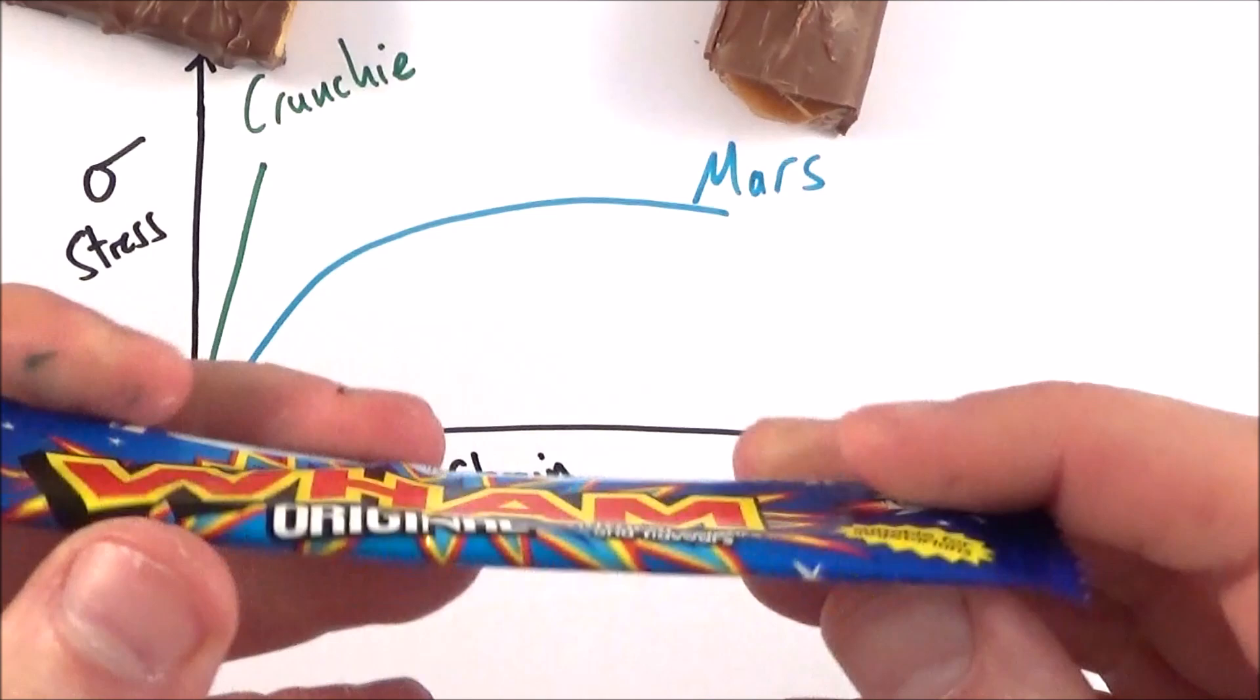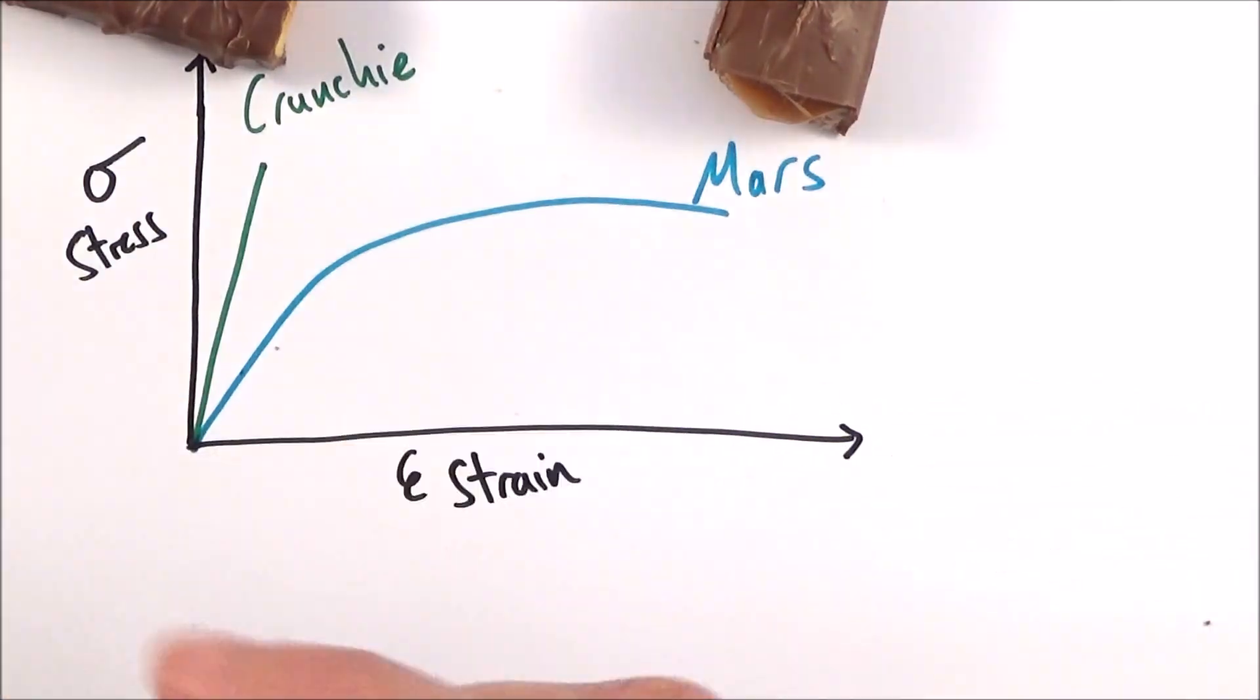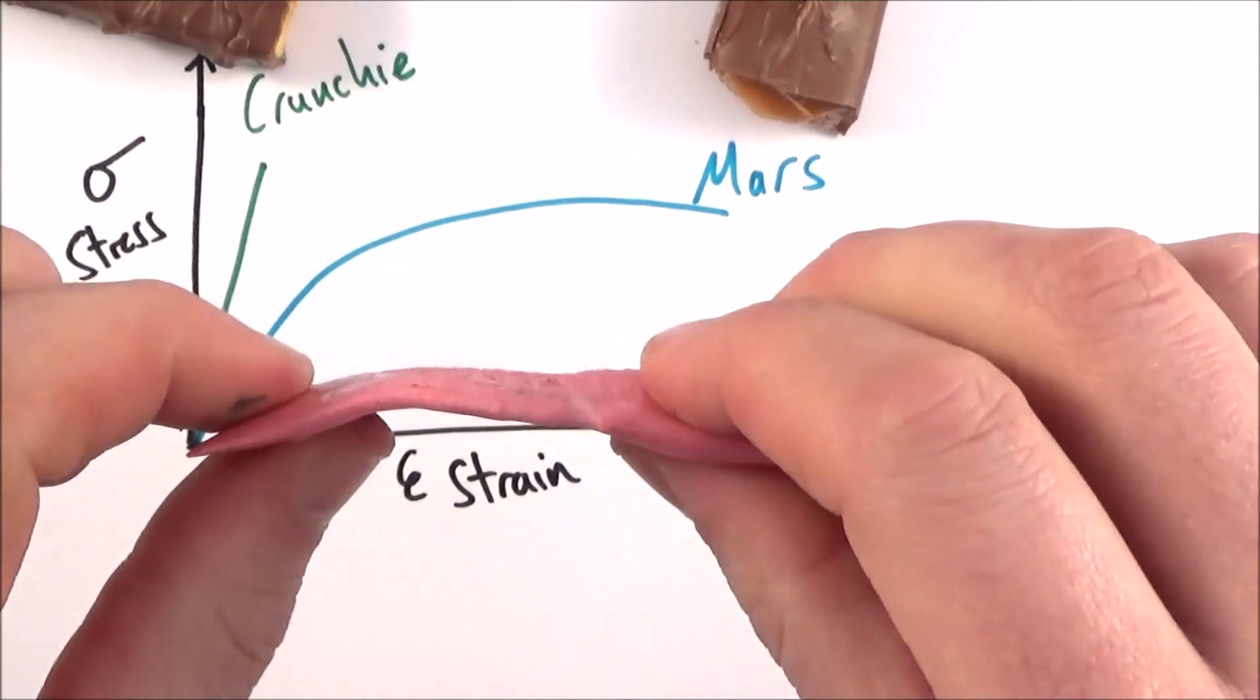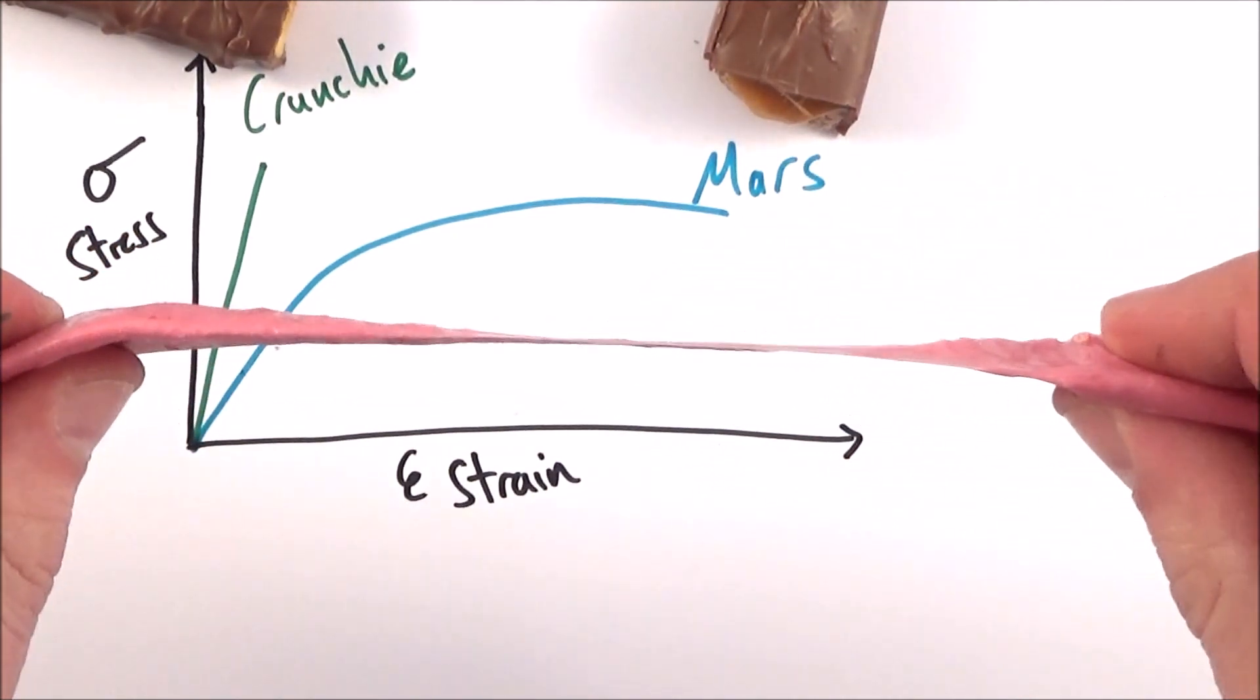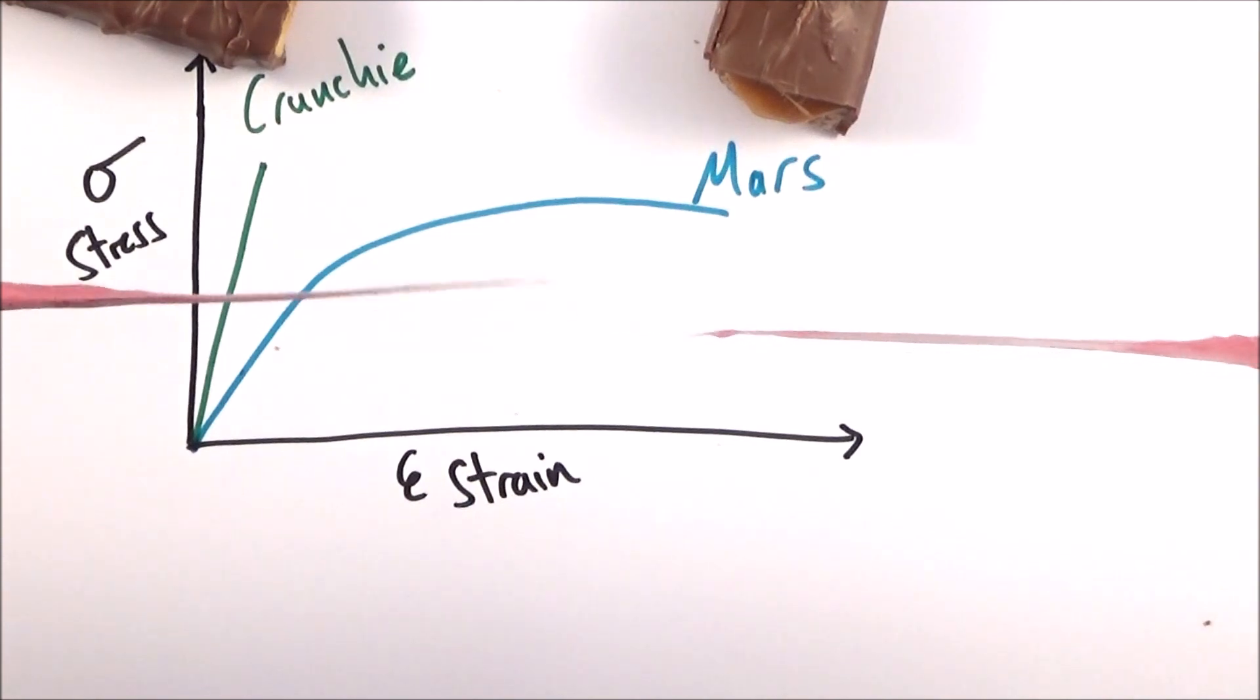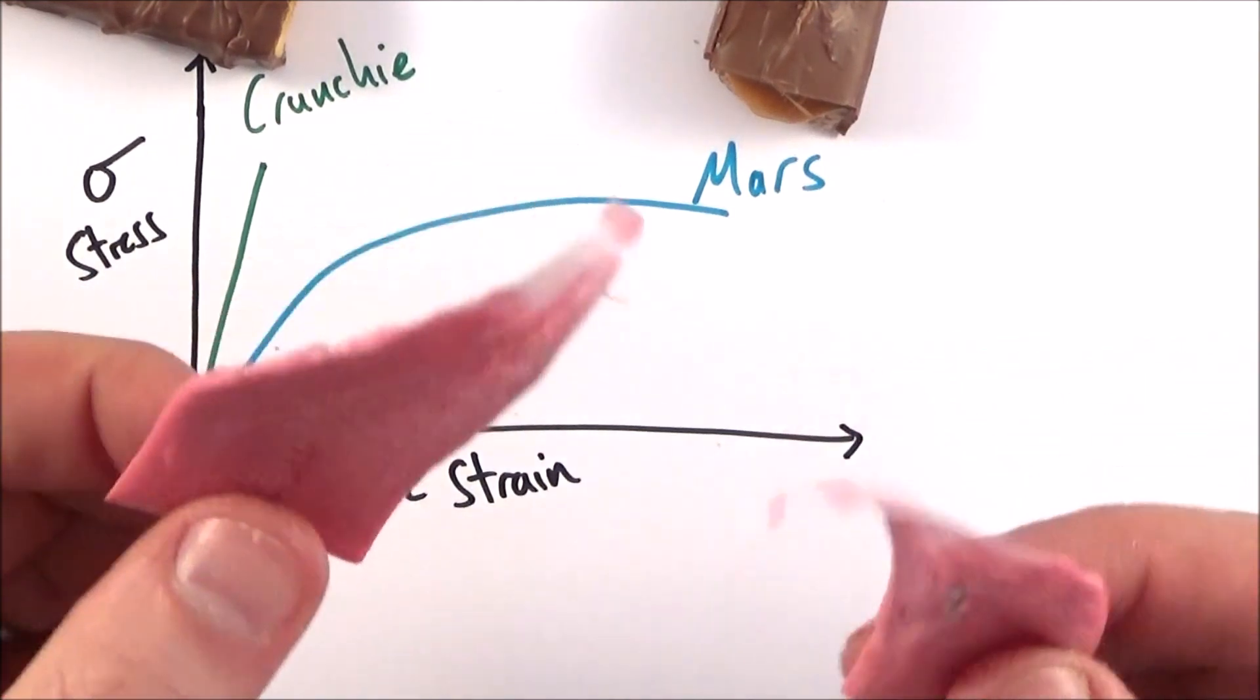Finally, here we have a Wham bar, and if we look at this, what we might see with a Wham bar is that even though I apply quite a small force, we get quite a long extension. And this kind of keeps extending and extending for a long way until it actually breaks.